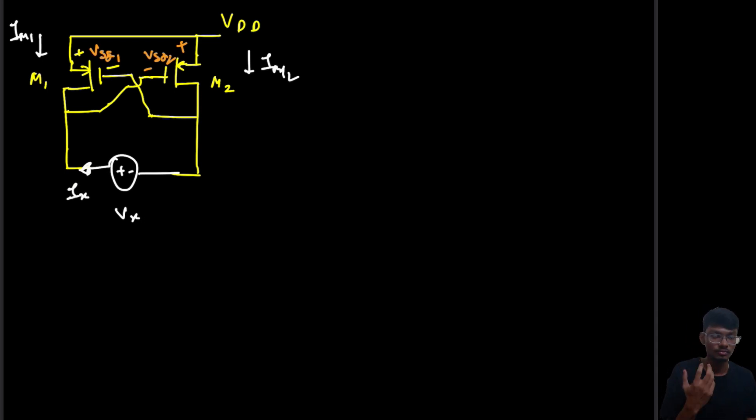First let us observe the KCL equations. This I_M1 is flowing through here, then this will flow through here because through the gate the current is zero. I_M1 is coming here. Similarly for I_M2, this I_M2 will also come over here.